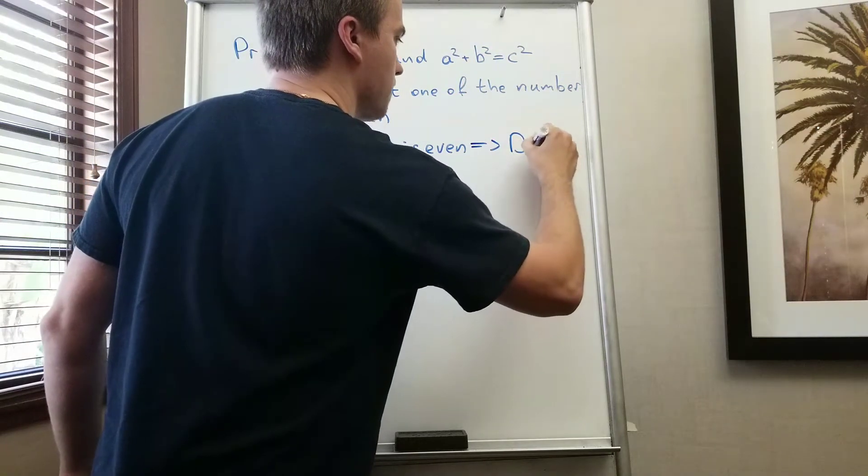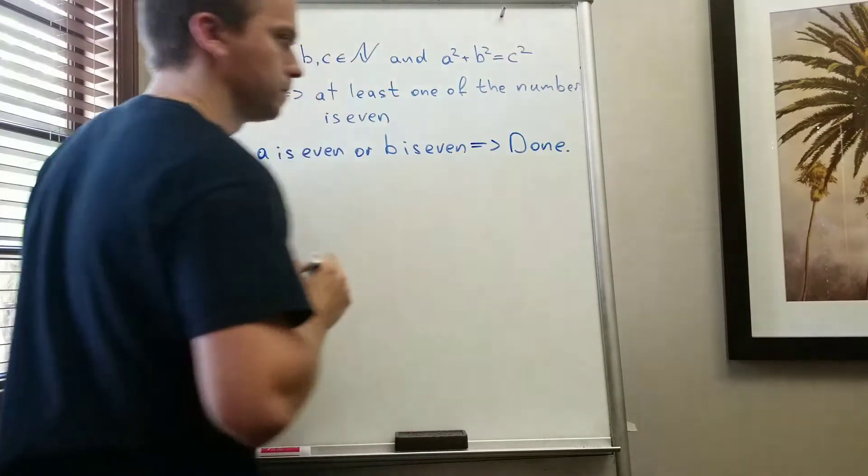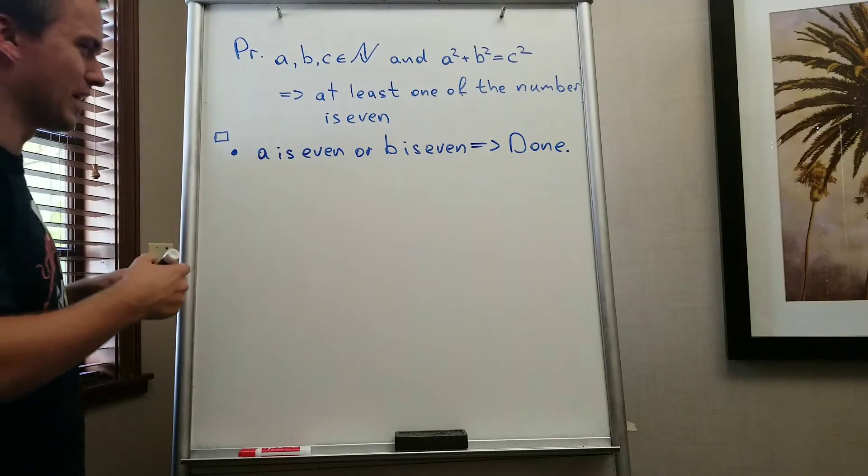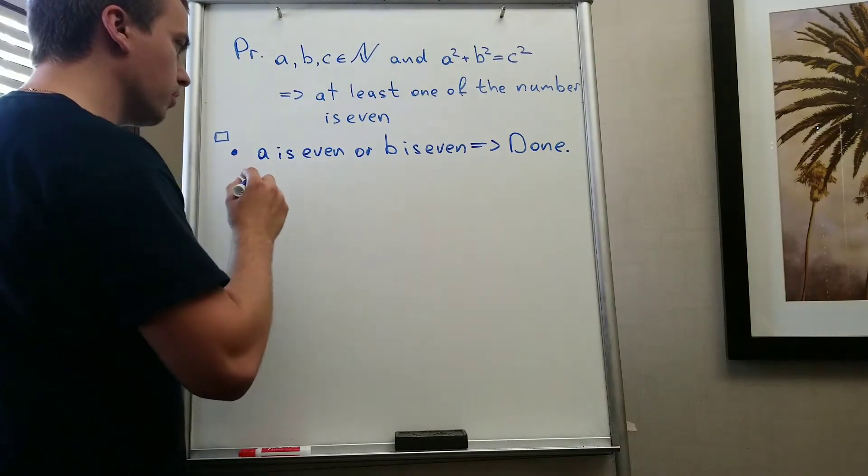We are done because we assume that one number is even, so we have this number is even. And our actual goal